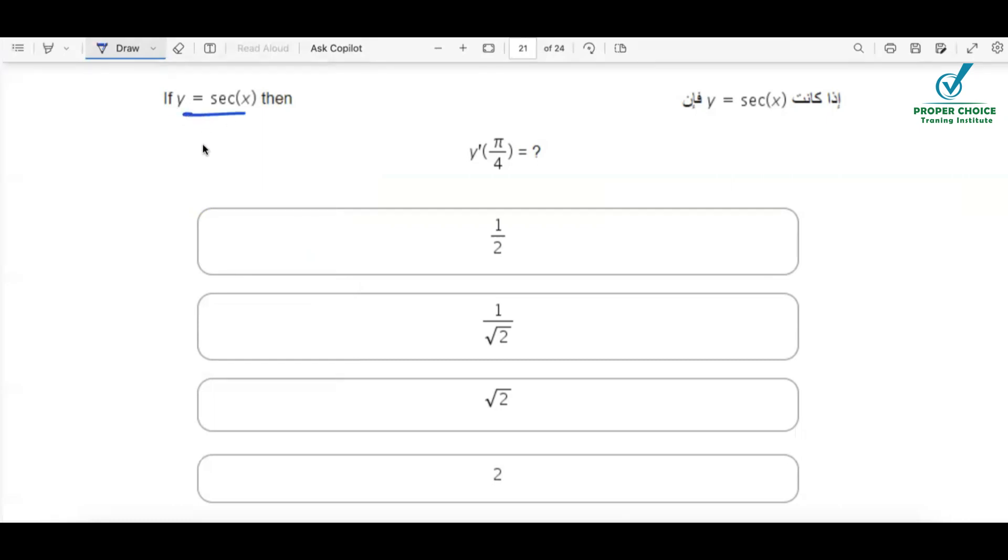If y is equals to secant x, then y prime of pi by 4 is what they are asking you to find. The derivative of the secant x. See, again, we can use a calculator and you also need to know from the trigonometry that secant x can be written as 1 by cos x.